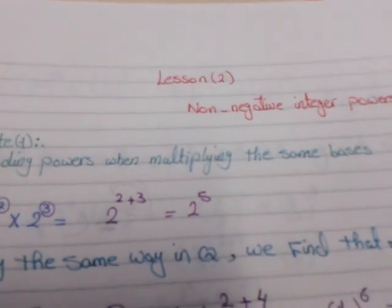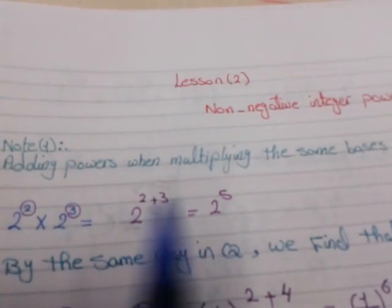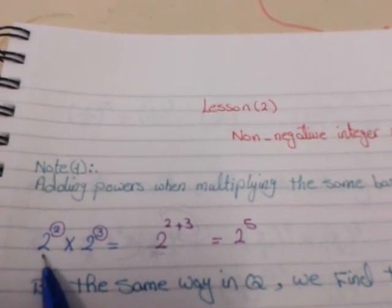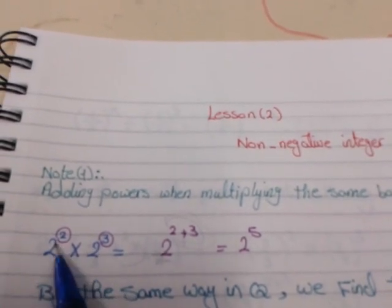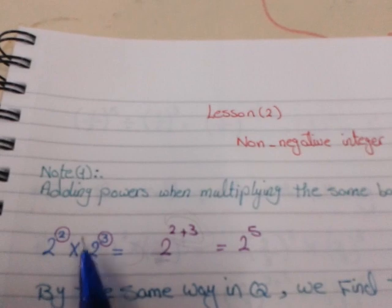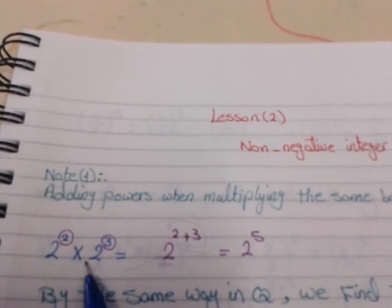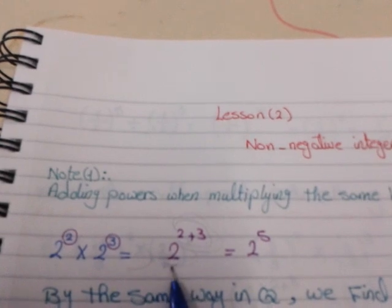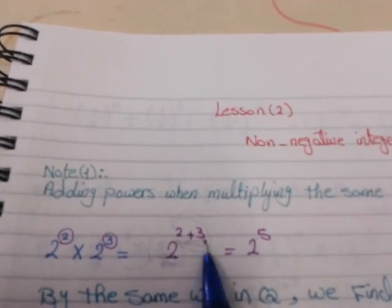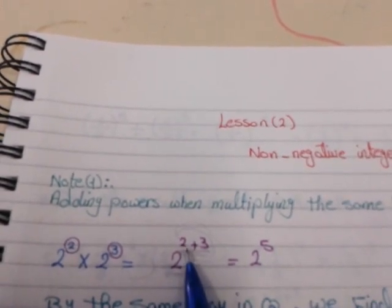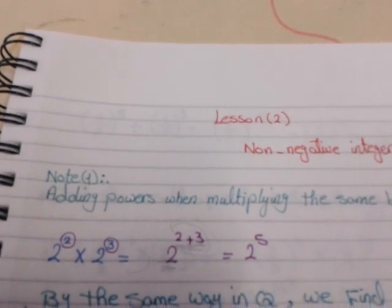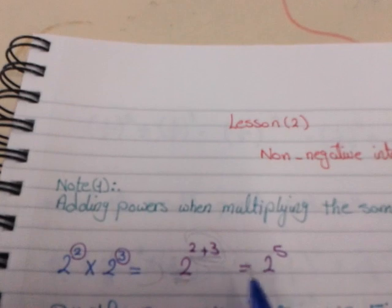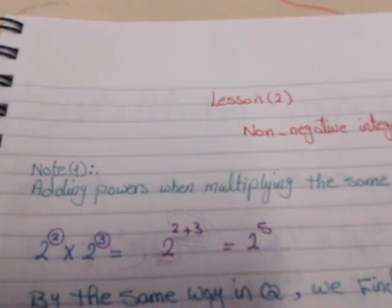In primary 6, we learned that when we have the same base — like 2² × 2³ — we add the powers: 2 plus 3 gives us 2 to the power 5.